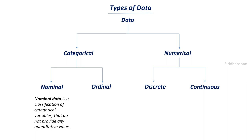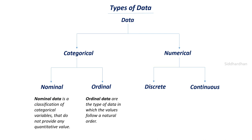For example, gender is categorical data with male and female — there is not any particular significance ordering between them; we cannot say one gender is more significant than the other. Similarly, color of a ball — red, green, yellow — there is no significance or ordering between these categories. This kind of data is called nominal data.